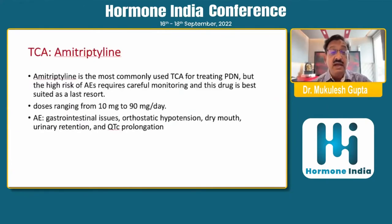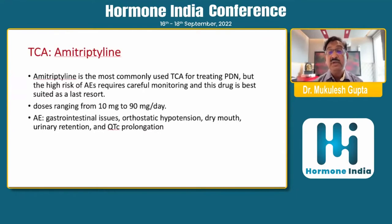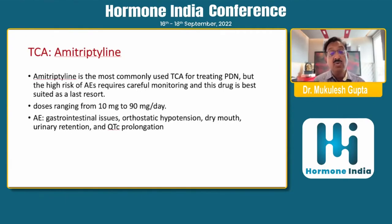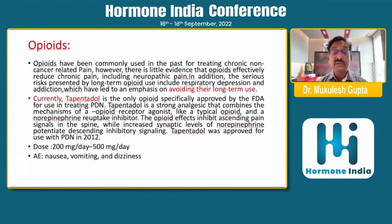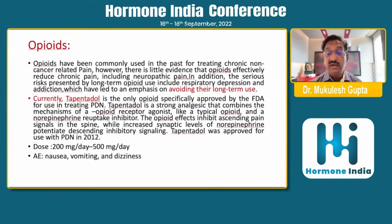Regarding tricyclic antidepressants, amitriptyline is most commonly used because it acts at more than one place in the pain pathway, making it useful in addition to first-line drugs. Dosage ranges from 10 to 75 mg per day; adverse effects include cholinergic side effects and QTc prolongation, which should be monitored. For opioids, all guidelines recommend avoiding long-term use, but tapentadol is the only opioid specifically FDA-approved for treating peripheral painful diabetic neuropathy. Tapentadol combines opioid receptor agonism and norepinephrine reuptake inhibition — a dual mechanism — at a dose of 200 to 500 mg per day; common adverse effects are nausea, vomiting, and dizziness.